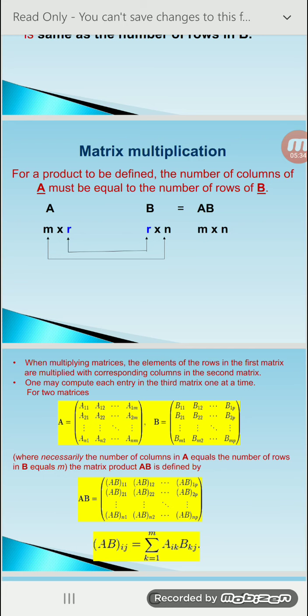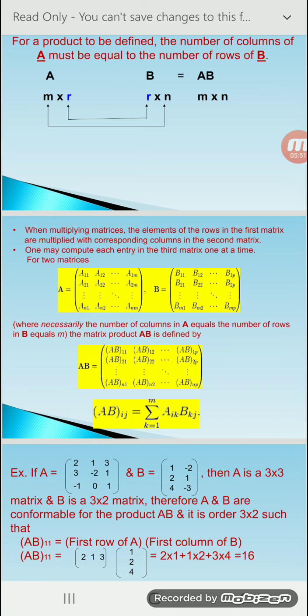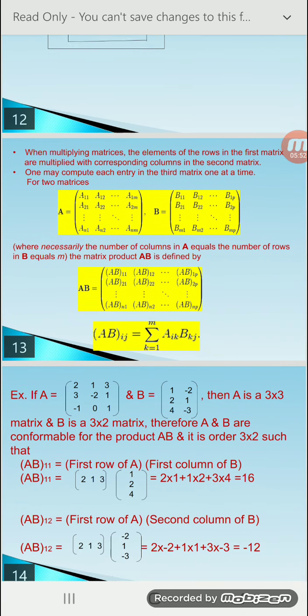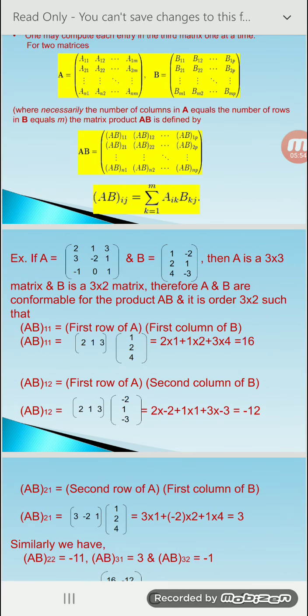When multiplying matrices, the elements of the rows in the first matrix are multiplied with the corresponding columns in the second matrix. For example, with matrices A having elements A11, A12, ..., A1M and matrix B having elements B11, B12, ..., B1P, the product is written as AB11, AB12, AB21, AB22, and so on.